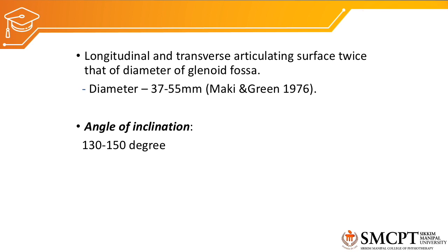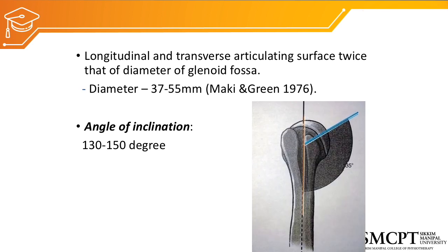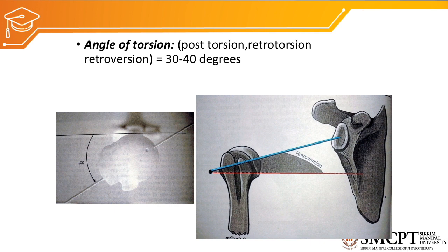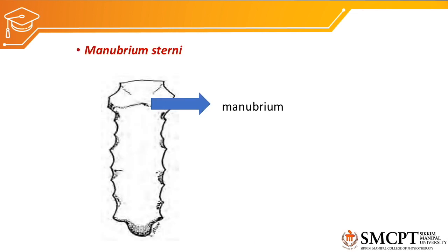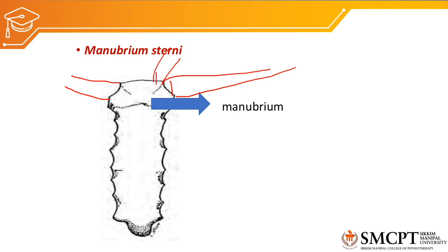The angle of inclination is about 130 to 150 degrees. The angle of torsion is about 30 to 40 degrees, also called posterior torsion or retrotorsion; it is the angle between the axis crossing both condyles and the axis of the humeral head. The next bone forming the shoulder complex is the manubrium sterni. The clavicle gets attached to the manubrium sterni, with the sternal end of the clavicle on both sides forming the sternoclavicular joint. It also gives attachment to muscles such as sternocleidomastoid and pectoralis major.